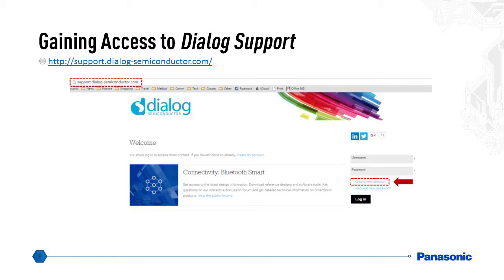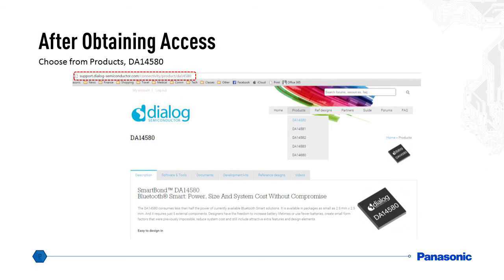Once you receive the email, go back to the Dialog support website and log in. After logging in, on the right-hand side you will see a few tabs. Click on Products and choose DA14580. The Dialog website is product-based, and when you choose the appropriate product, you will gain access to all the tools, documents, and SDK.